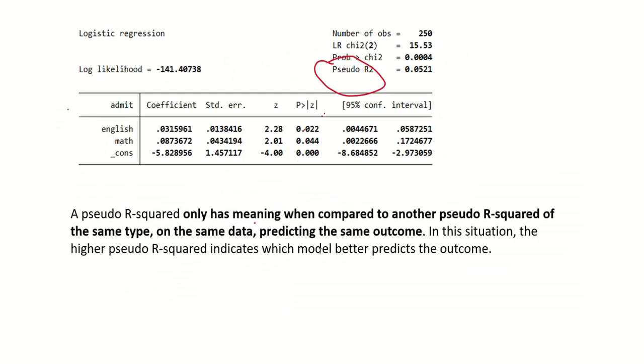After that, the only thing that remains is pseudo R-squared. Its value is 0.0521. We cannot explain this as normal R-squared. A pseudo R-squared only has meaning when compared to another pseudo R-squared of the same type, on the same data, predicting the same outcome. In this situation, the higher pseudo R-squared indicates which model is better and which model we should use.